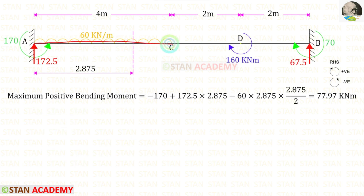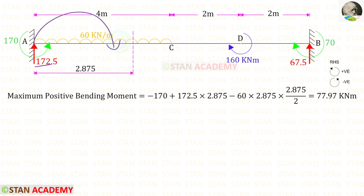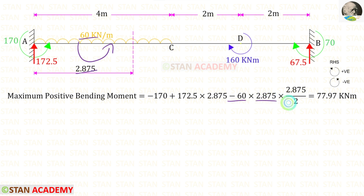Under the uniformly distributed load, let us find the maximum positive bending moment. MA is acting in the anticlockwise direction so it will be negative. RA is acting in the clockwise direction so it will be positive with distance 2.875. The uniformly distributed load is acting in the anticlockwise direction so it is negative — we multiply the distance and the distance by 2. Finally, we will get a maximum positive bending moment of 77.97.